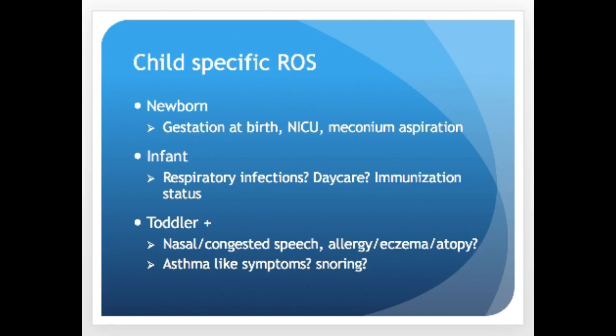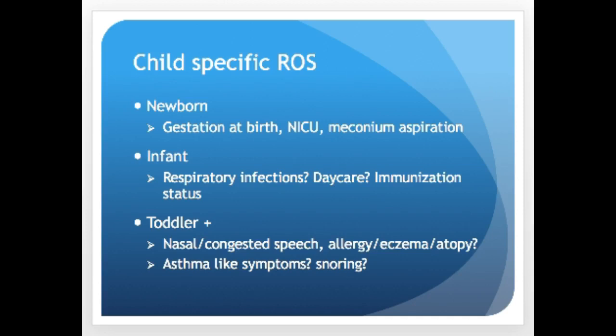When seeing children for a respiratory issue, ask about gestational age at birth, NICU stay, and any meconium aspiration. Ask about respiratory infections, daycare use, and immunization status for infants and toddlers. Also ask about nasal congestion and nasally speech. If there's a history of allergies, atopic dermatitis or eczema, note the atopic triad: asthma, allergies, and atopic dermatitis — the three A's go together in that atopic picture.